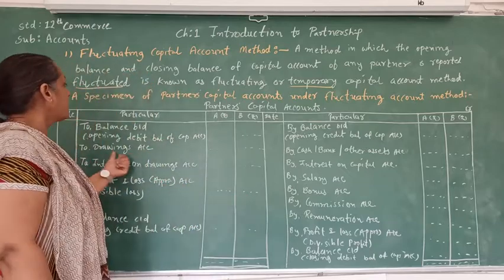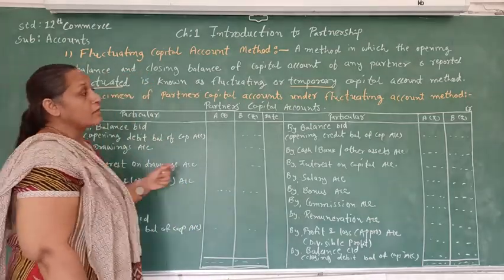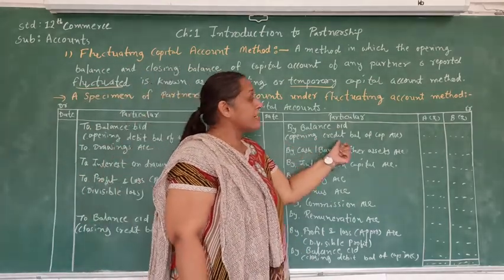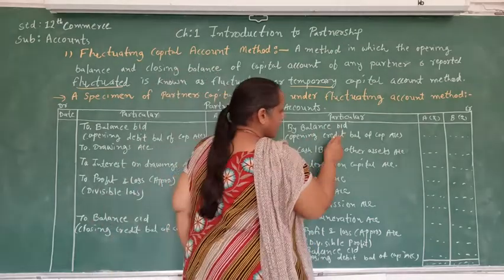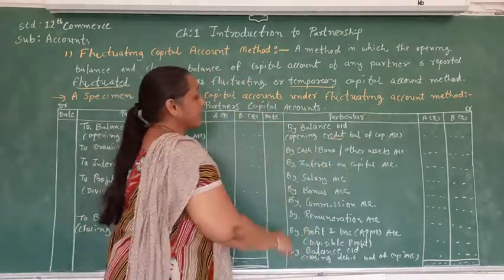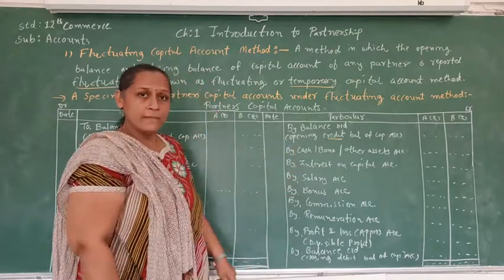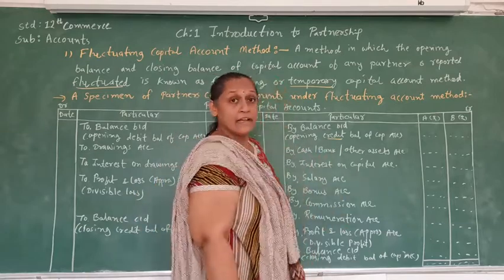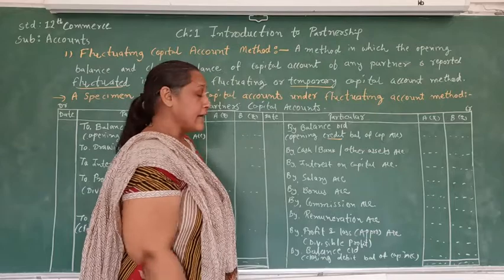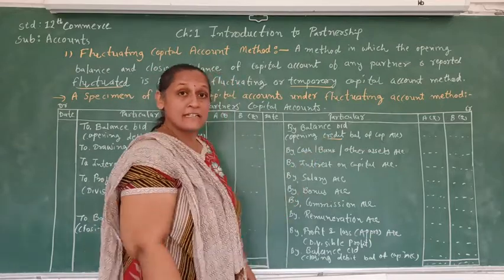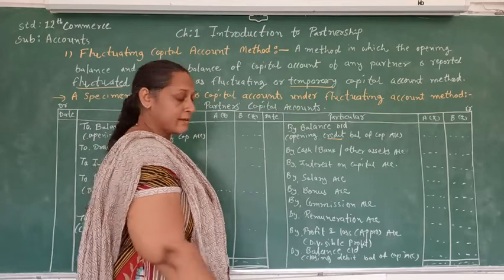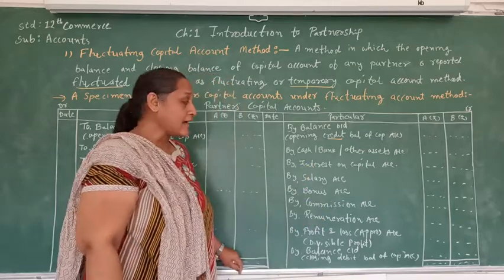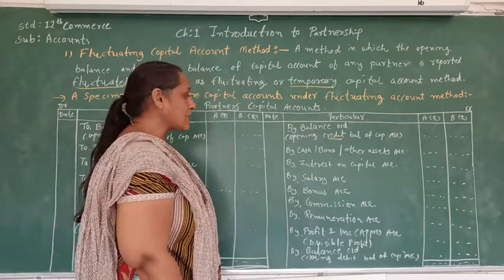Here is the specimen of the partner's capital account. The credit balance of a capital account — the balance brought down — is written on the credit side. If any additional capital is brought by a partner, whether by cash, bank, or any asset, it will be reported on the credit side of the partner's capital account. Interest on capital paid to the partner is also written on the credit side of the partner's capital account.